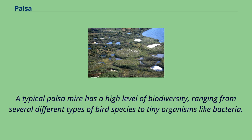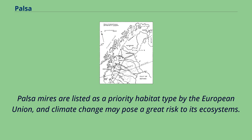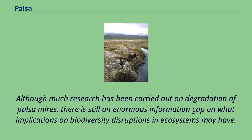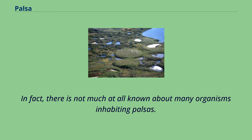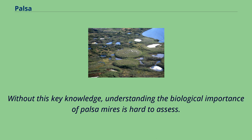A typical palsa mire has a high level of biodiversity, ranging from several different types of bird species to tiny organisms like bacteria. This is largely due to its outstanding mineralotrophic-ombrotrophic and water table gradients, which enable the presence of several microhabitats distributed in different degrees of wetness. Palsa mires are listed as a priority habitat type by the European Union, and climate change may pose a great risk to their ecosystems. Although much research has been carried out on degradation of palsa mires, there is still an enormous information gap on what implications biodiversity disruptions in ecosystems may have. There is not much known about many organisms inhabiting palsas, and it is vital to gain more knowledge about the distribution of these organisms, as well as patterns of species richness long-term, in order to understand and predict possible implications of potential loss of palsa. Without this key knowledge, understanding the biological importance of palsa mires is hard to assess.